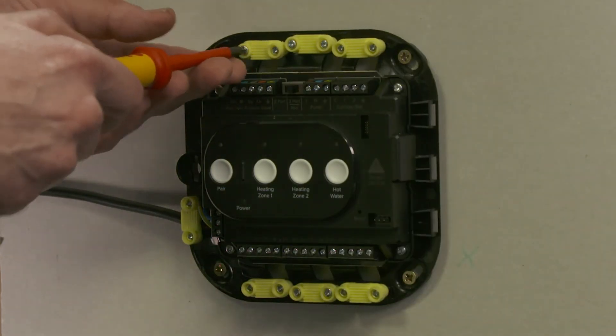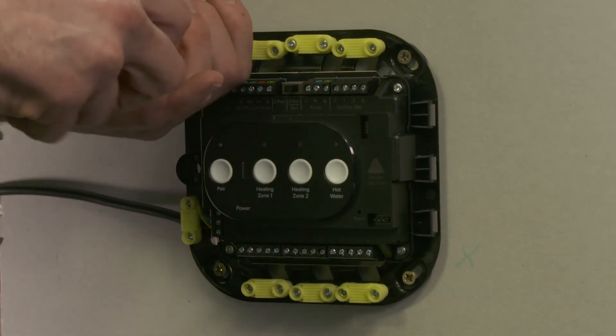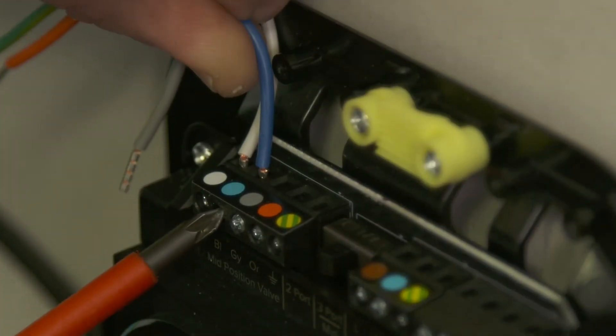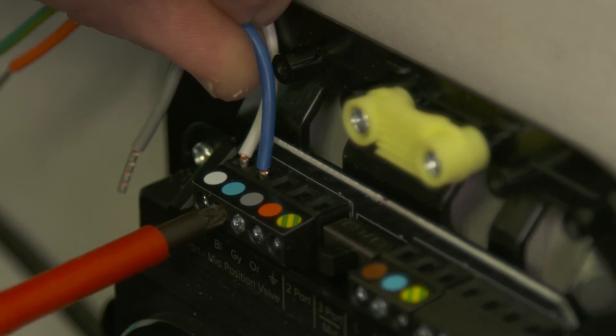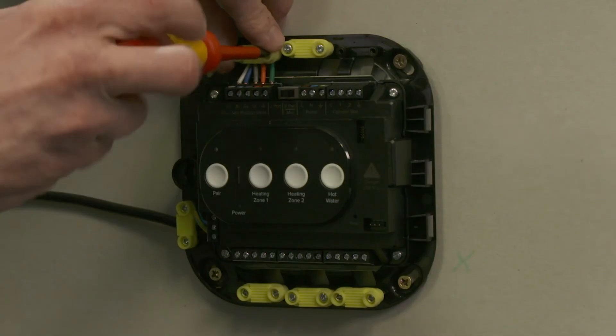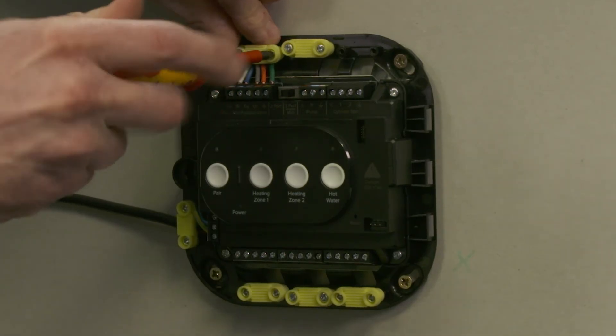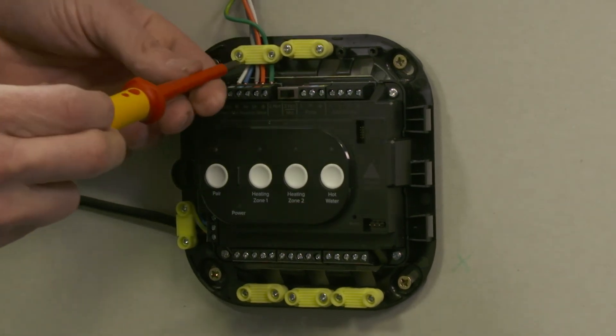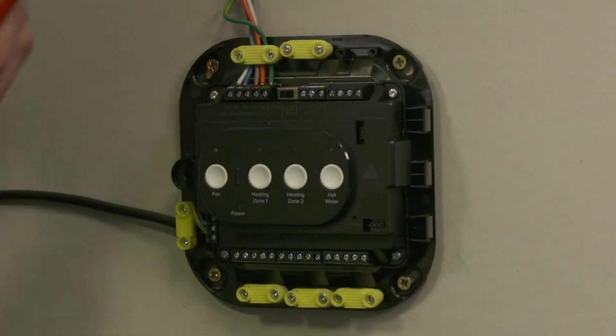Remove the wiring clamp for the three port mid position valve and wire in the valve. Refit the wiring clamp ensuring the outer sheathing is secured. The outer sheathing is not secured in this video, for clarity only.